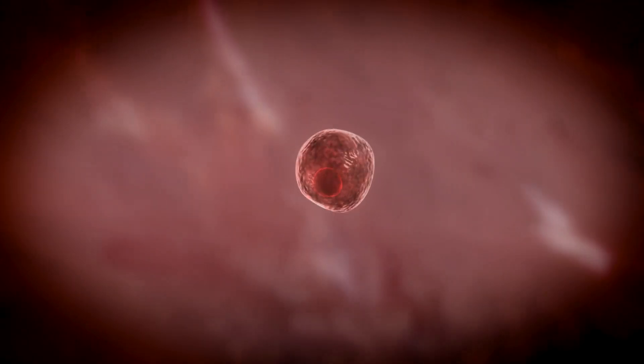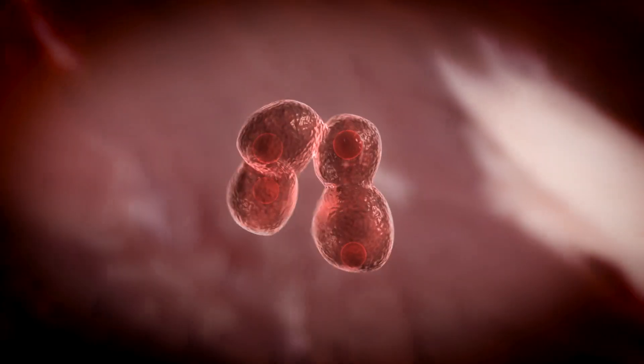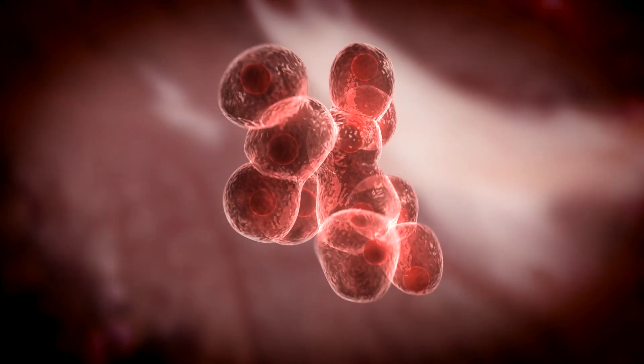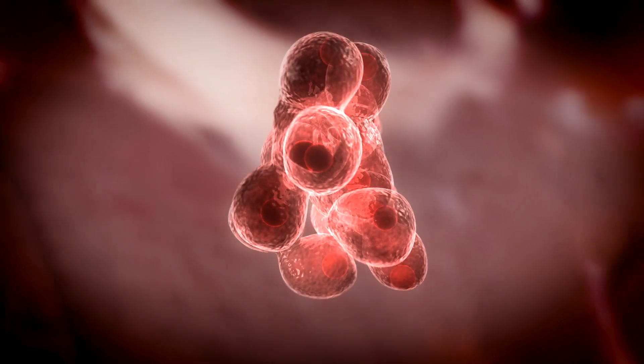So when you first get a bacteria, what happens is it grows and it replicates, and this is that acute stage when you just get bit by a tick and we get sick. Antibiotics work really well. So this is a video with cells growing, and this is what happens when something's active. Antibiotics can actually get in and interrupt that ability of the bacteria to replicate.